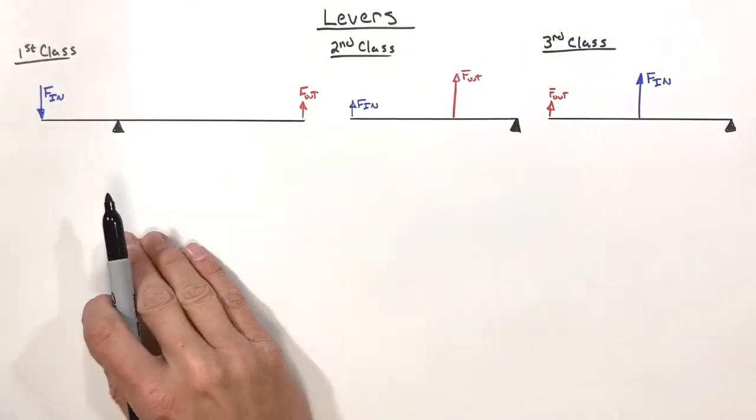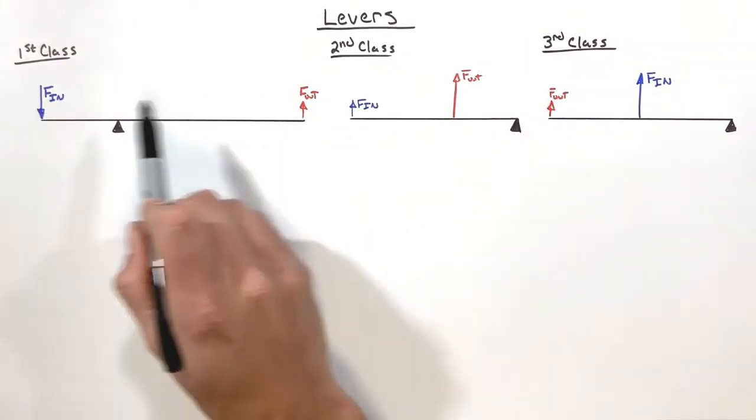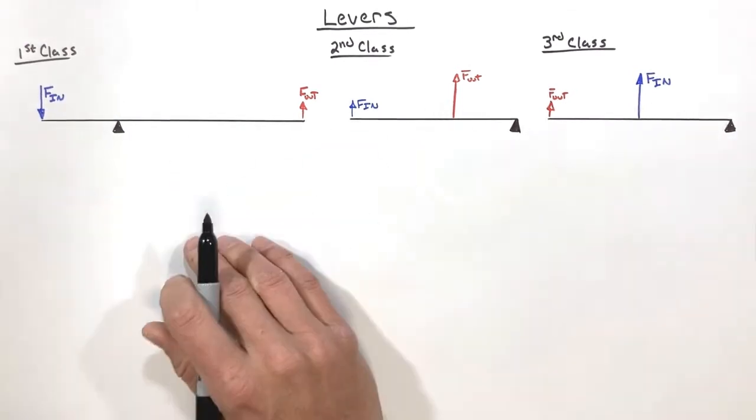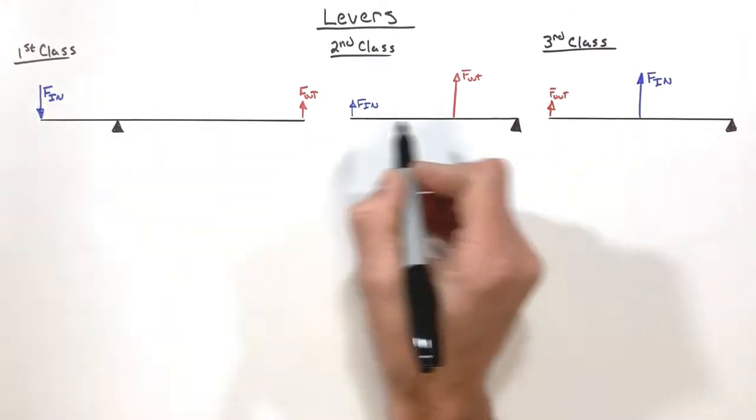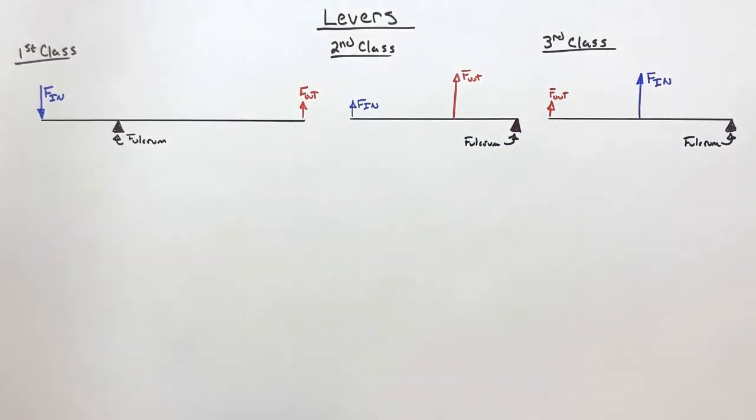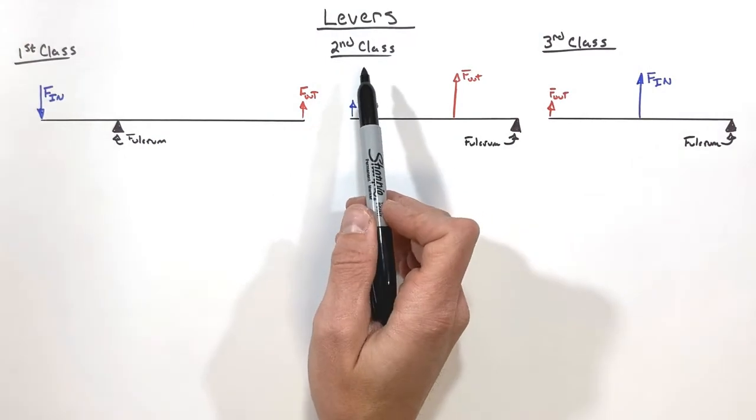Now you'll notice for all three classes of levers, the arrangement of input and output forces relative to the fulcrum varies, the fulcrum being this pivot point on each lever. Now you'll remember the job of a simple machine is...